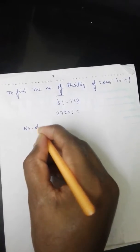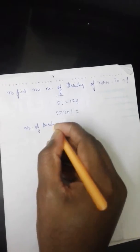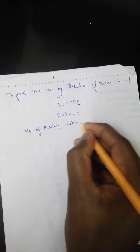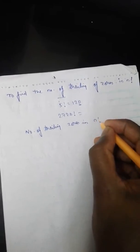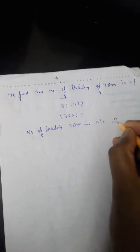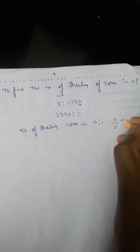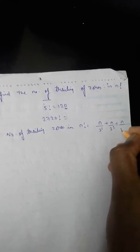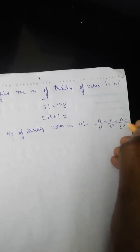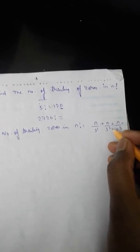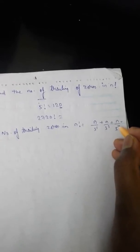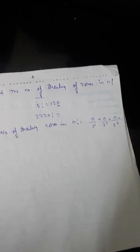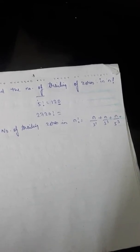The shortcut method is: the number of trailing zeros in n factorial equals n divided by 5¹, plus n divided by 5², plus n divided by 5³, and so on — continuing until you get a quotient less than 1. Once you get a quotient less than 1, discard that term and all further terms.